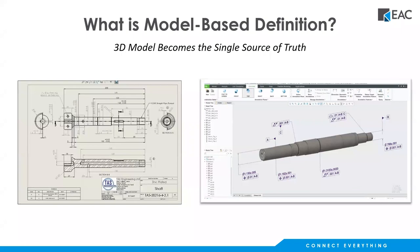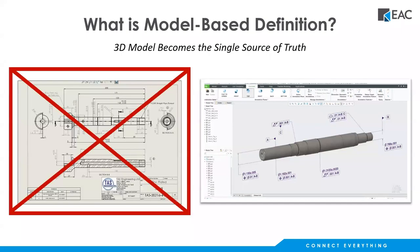To start, I'd like to recap the definition of MBD. The definition can be described by this phrase: the 3D model becomes the single source of truth for our product and manufacturing information. Typically in industry today we have two sources of truth — not only the model but also a 2D drawing, and in most cases this 2D drawing represents the legal asset. The goal of MBD is to get rid of that 2D paper print process and contain all information within the model itself using 3D annotations.